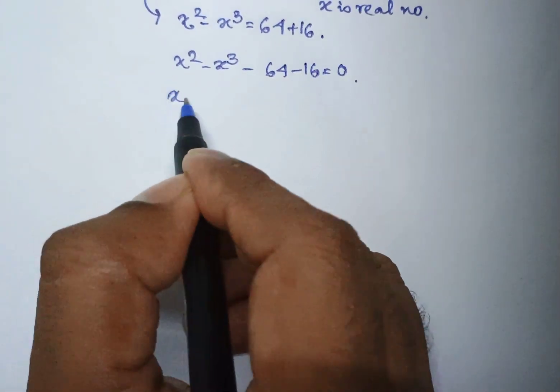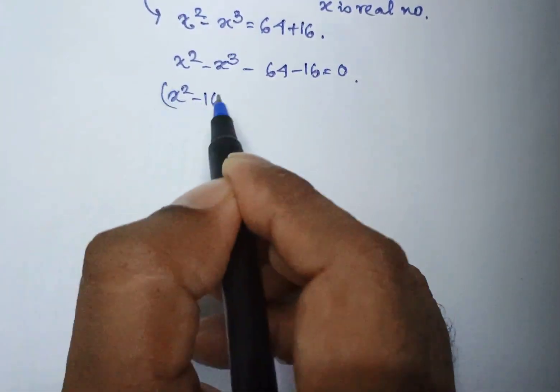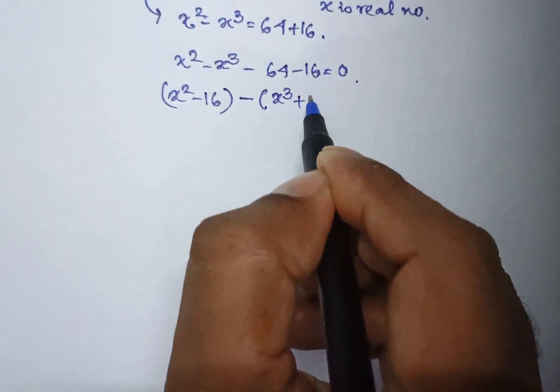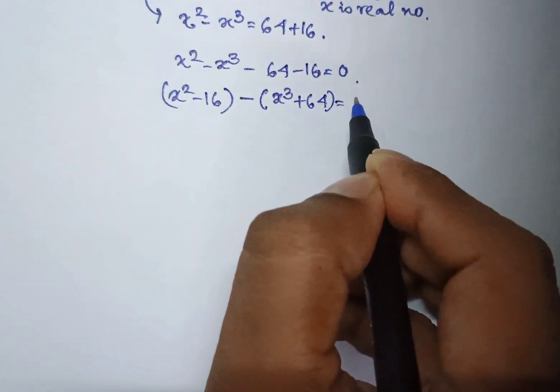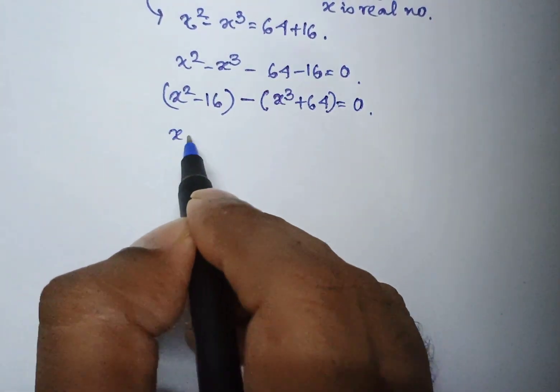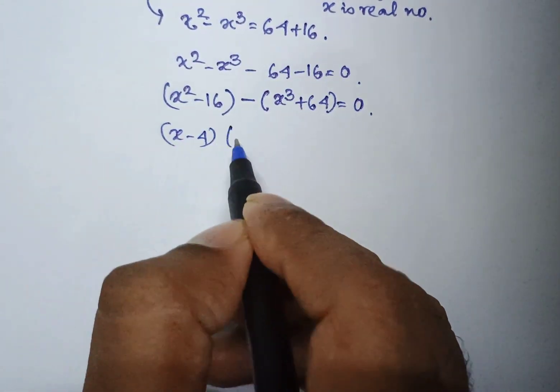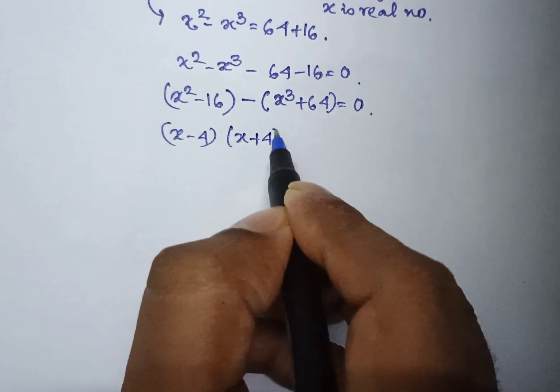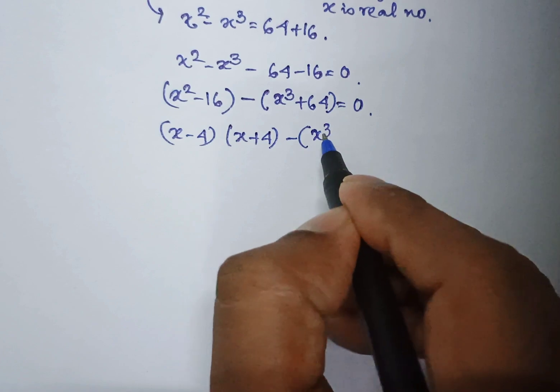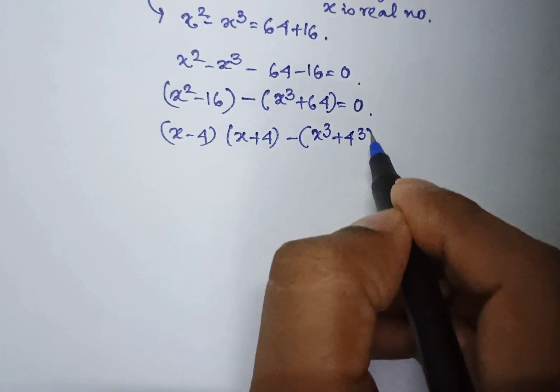Taking x square minus 16 in bracket and another bracket is x cube plus 64 equal to 0. x square minus 16 can be written as x minus 4 into x plus 4 and deriving x cube plus 64 at x cube plus 4 whole cube equal to 0.